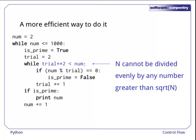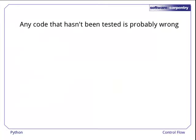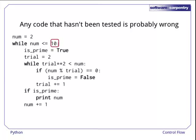As a lot of programmers will tell you, any code that hasn't been tested is almost certainly wrong. Let's change the bound on the outer loop so that we only print out the primes up to 10. Here's its output.